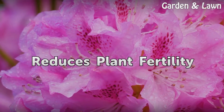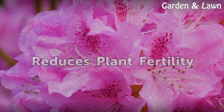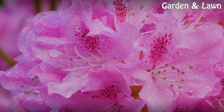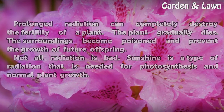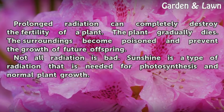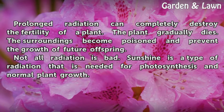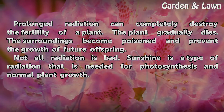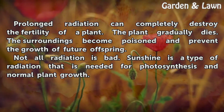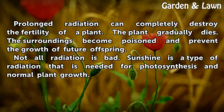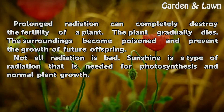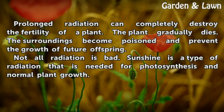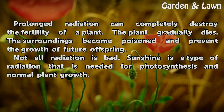Reduces Plant Fertility. Prolonged radiation can completely destroy the fertility of a plant. The plant gradually dies, and the surroundings become poisoned, preventing the growth of future offspring.